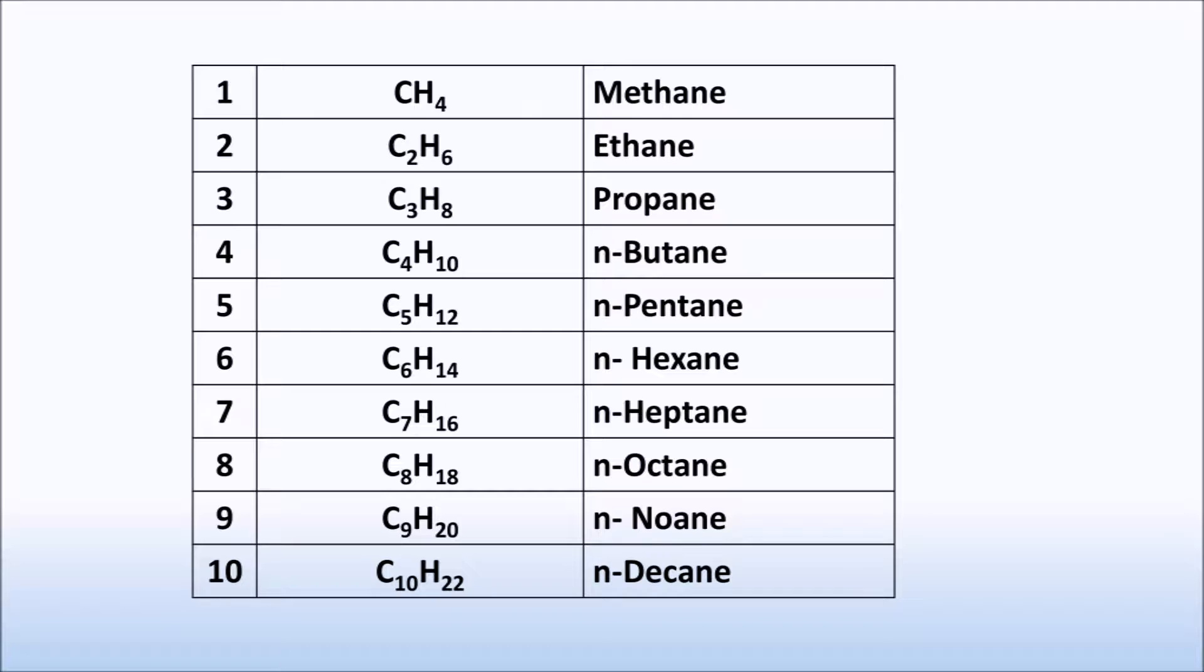Names of the first four simplest alkanes are taken from their common names: methane, ethane, propane, and butane.